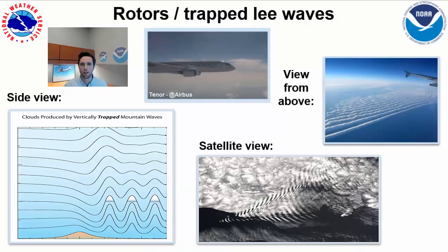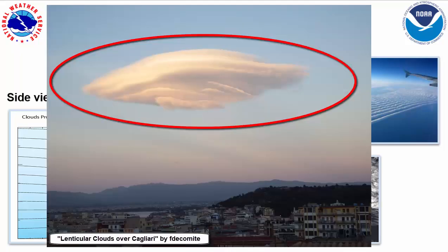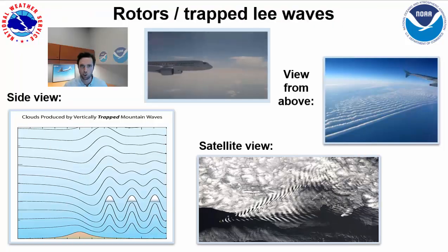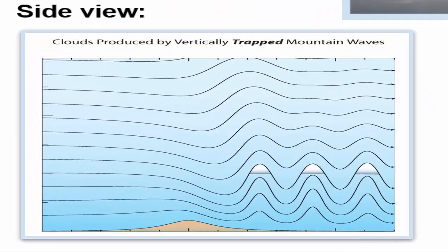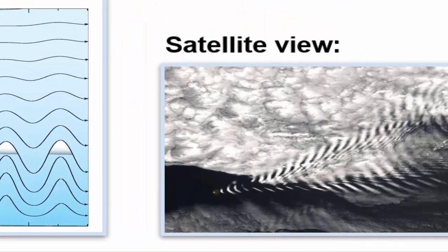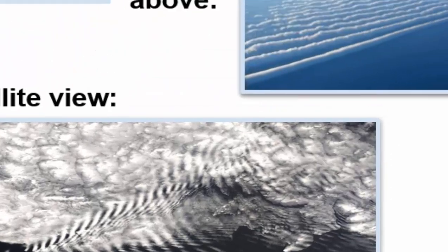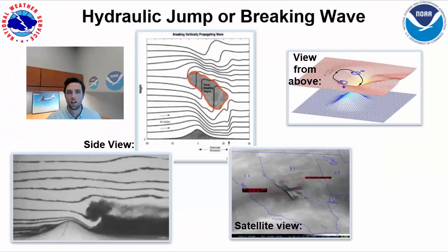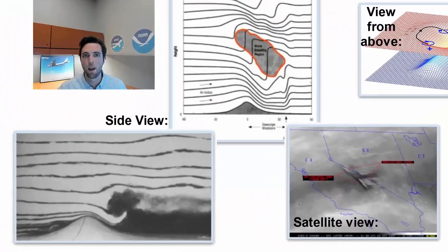A common telltale sign for your lower altitude rotor waves is the formation of lenticular clouds just past your ridge tops, seen here from several different vantage points.